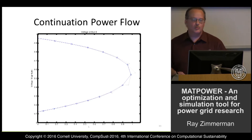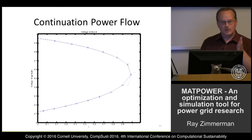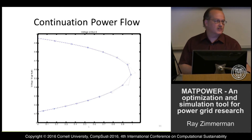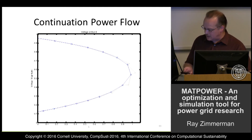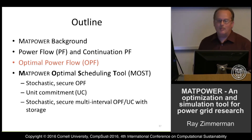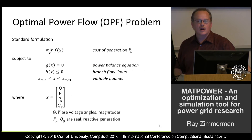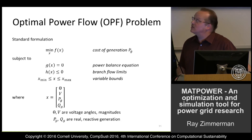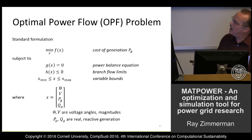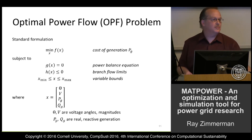The continuation power flow problem is essentially solving a sequence of power flow problems where a given parameter, such as loading in the network, is modified. For example, you might increase loading until you see a voltage collapse — this is the famous nose curve. Optimal power flow, on the other hand, is an optimal scheduling problem with nonlinear constraints: minimizing the cost of generation subject to power balance at each node, constraints on nonlinear branch flows, and bounds on variables such as generation and voltage limits.